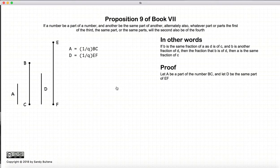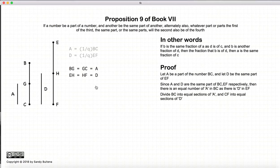Alright, to prove this relationship, first we start off that A is a part of BC, and D is the same part or fraction of EF. Now we're going to divide BC into the parts that are equal to A. So BG is equal to GC is equal to A. And likewise, we're going to take EF and divide it into parts that are equal to D. So EH and HF is equal to D.